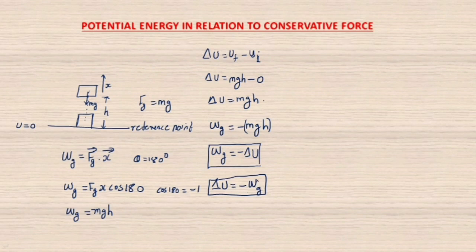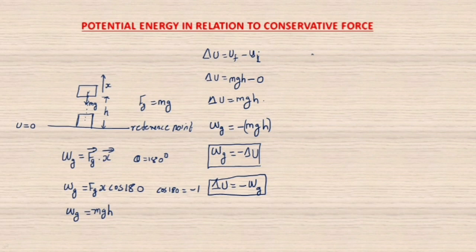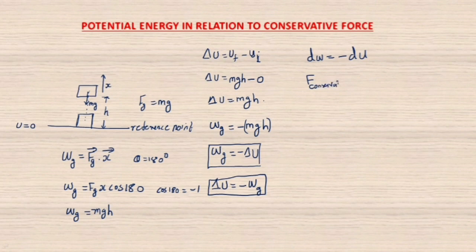Now let's discuss another relation about potential energy in relation to conservative force. Consider the same example — you are applying a force on the body and it displaces a very small amount dh. The small work done is dW = −dU. The formula for work done is force times displacement: F_conservative × dh = −dU.